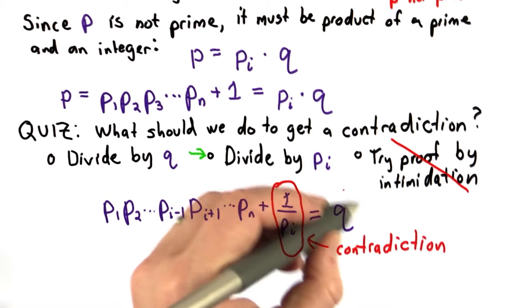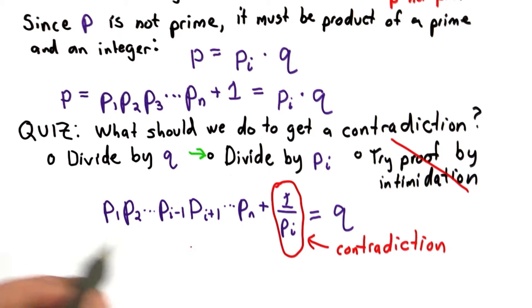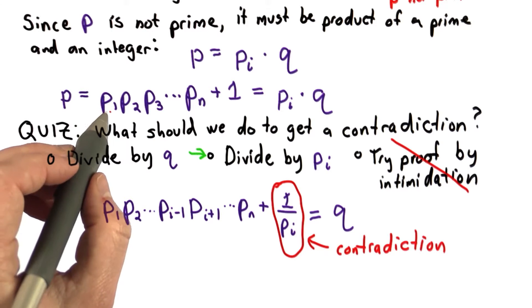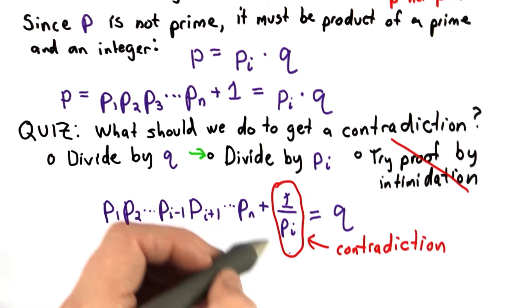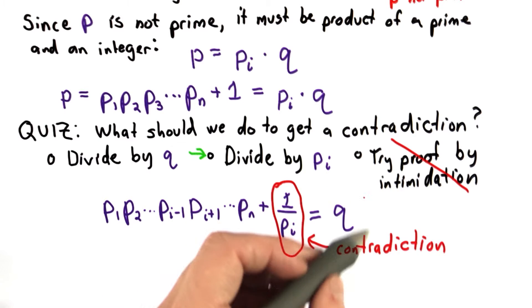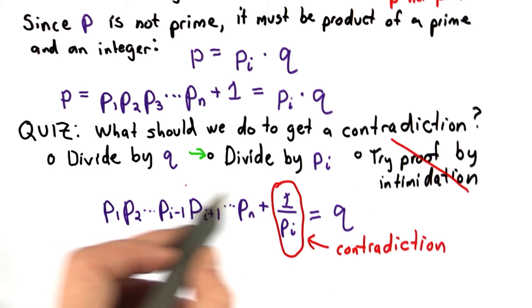This is our contradiction. Q is an integer. This is an integer. P_i cannot be 1 because it's a prime. It must be some integer 2 or greater. So that means that this is not a whole number. So there's no way we could get an integer as Q by adding something that's not an integer to an integer.